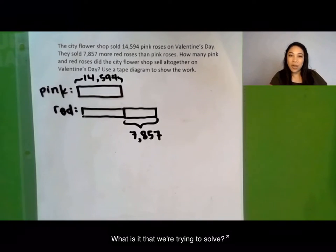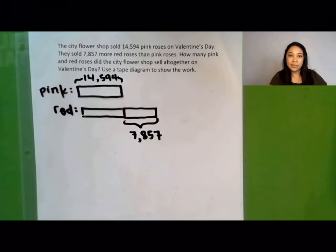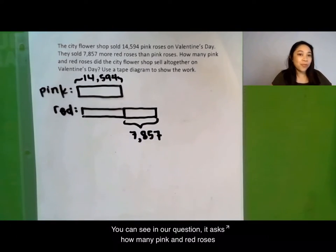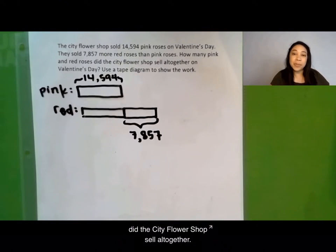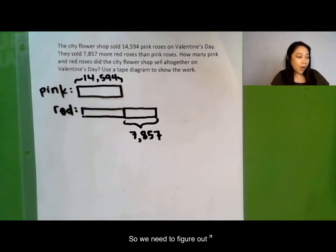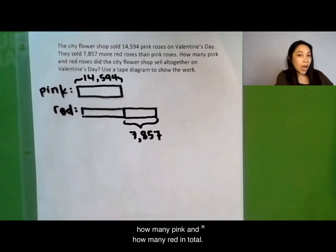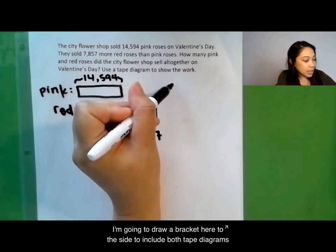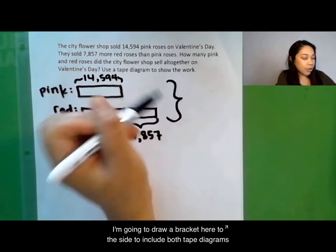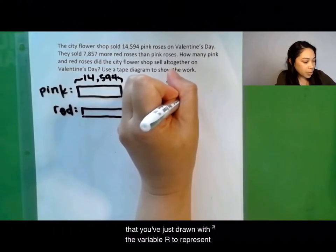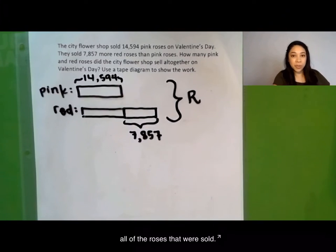What is it that we're trying to solve? You can see in our question it asks how many pink and red roses do the city flower shop sell all together? So we need to figure out how many pink and how many red in total. I'm going to draw a bracket here to the side to include both tape diagrams that we've just drawn.